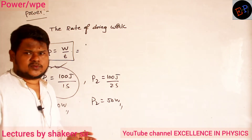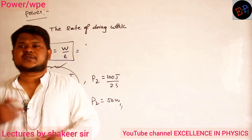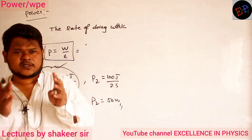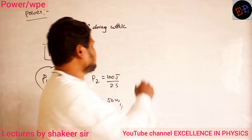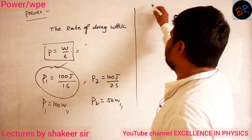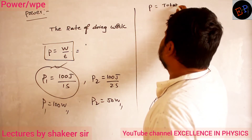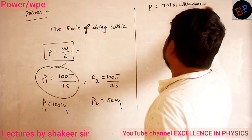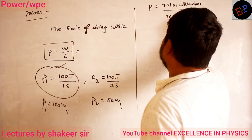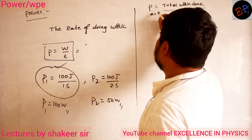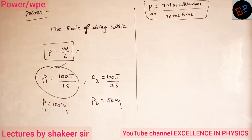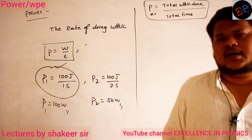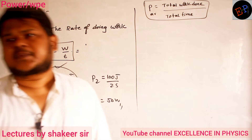So if a person is able to do the same amount of work in less time, we say the power of that person — or that particular machinery — is greater. That is called power. Now, power is equal to total work done divided by total time. This power we call average power.